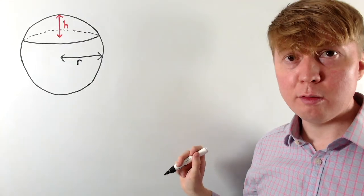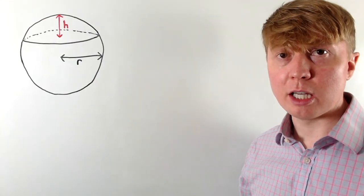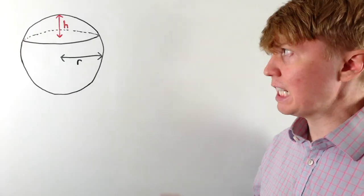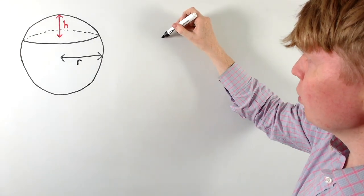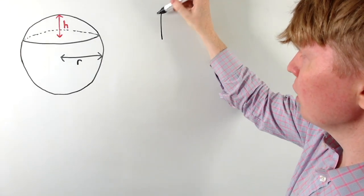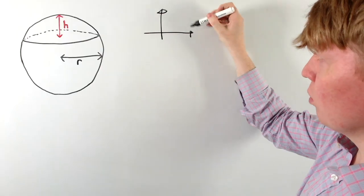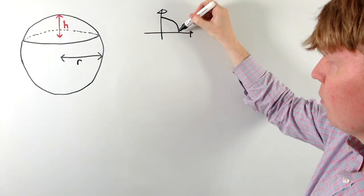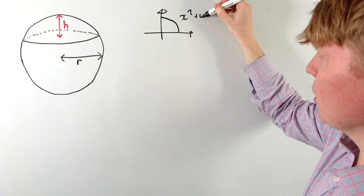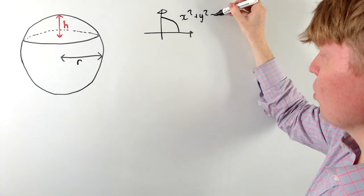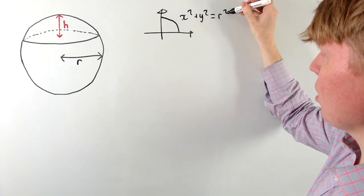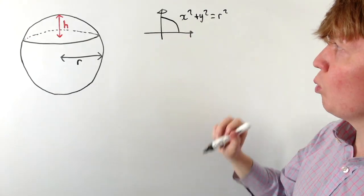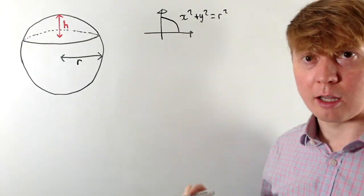We can calculate the volume by doing this as a volume of revolution — you might call this the disk method — where we imagine the curve that defines a circle in 2D. We have part of the curve x² + y² = r², and if we rotate this around the y-axis, this defines a sphere.